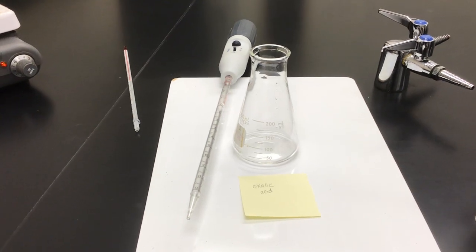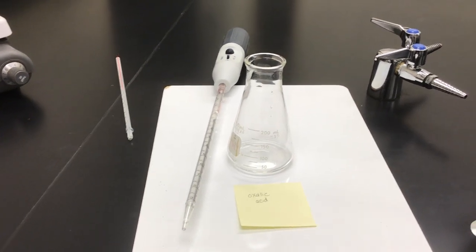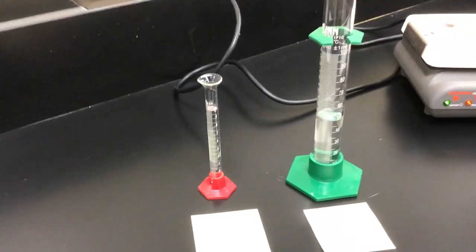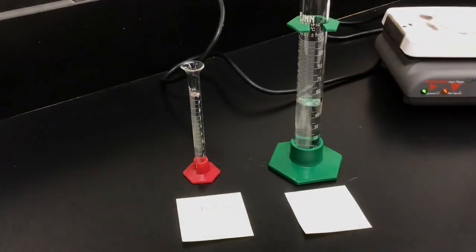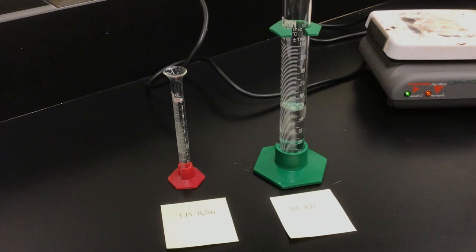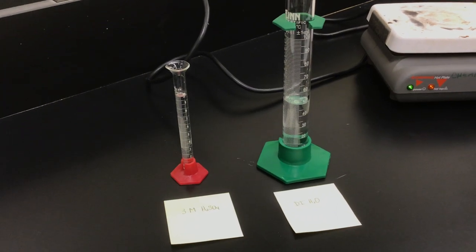It says in the directions that we're going to add about 10 milliliters of sulfuric acid and about 50 milliliters of water to our oxalic acid solution.